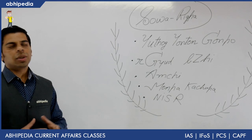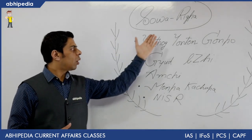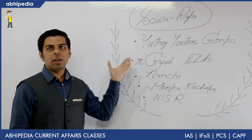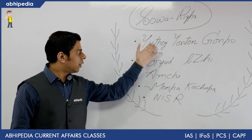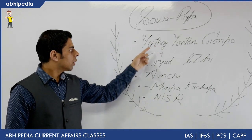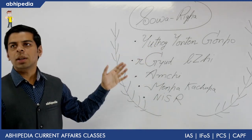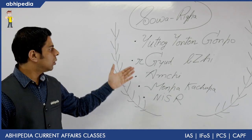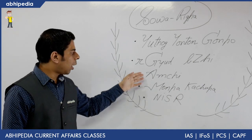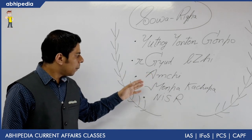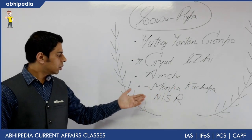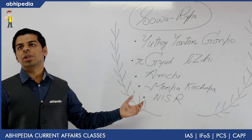For quick revision of key terms: Yuthog Yonten Gonbo is the father of Sova Rigpa; Yuthi is the fundamental textbook (translating to Four Tantras); Aamchi are the practitioners; Manpa Ka Chupa is the six-year course run in four institutions; and NISER is the new national institution being set up in Leh, Ladakh.